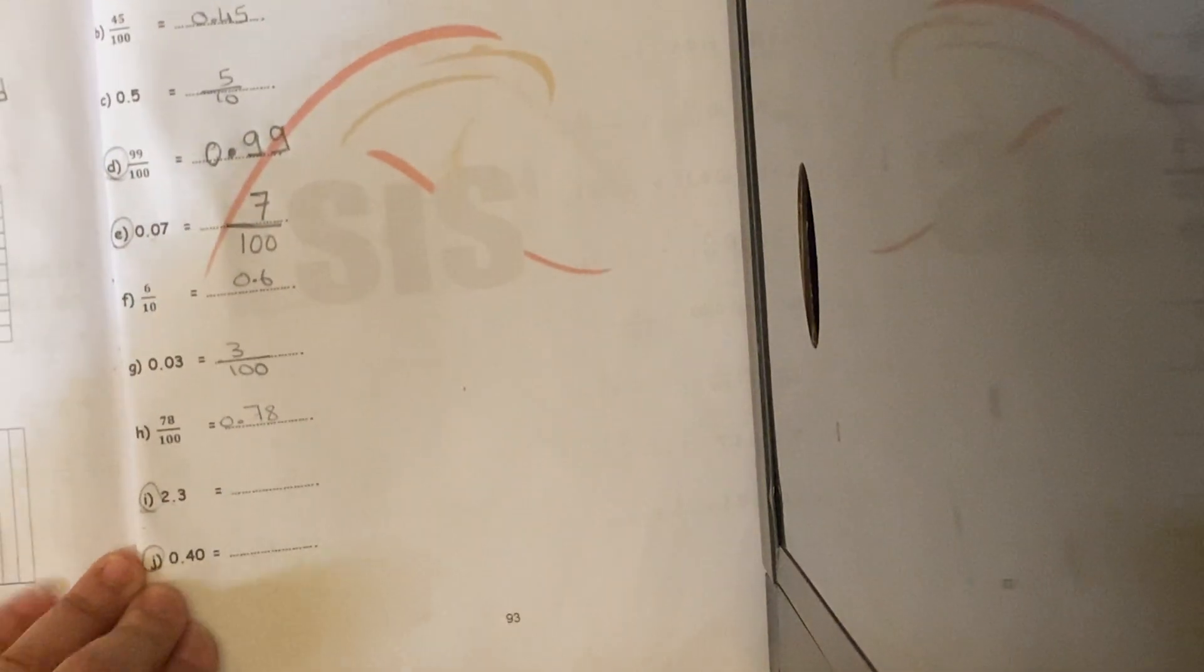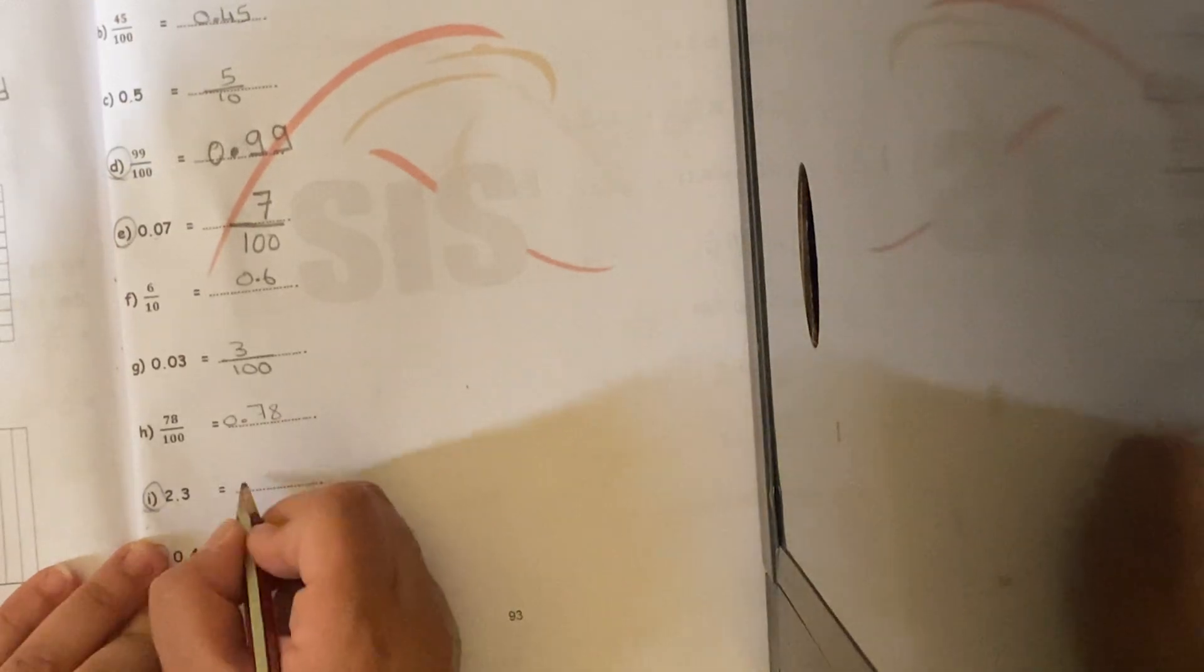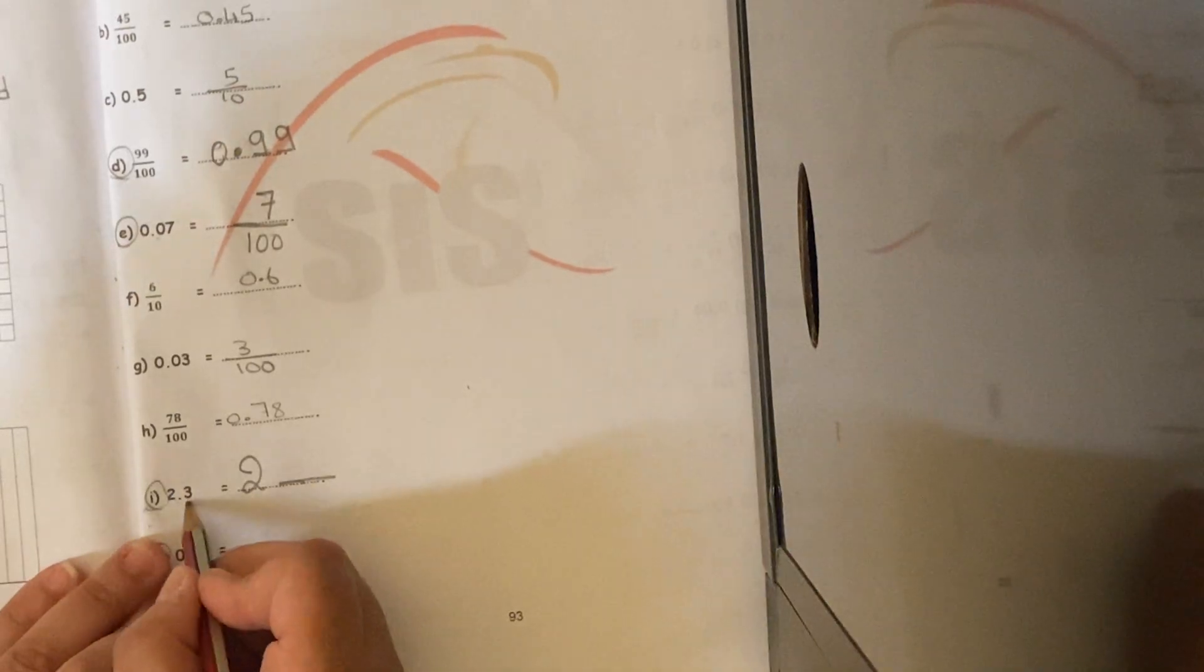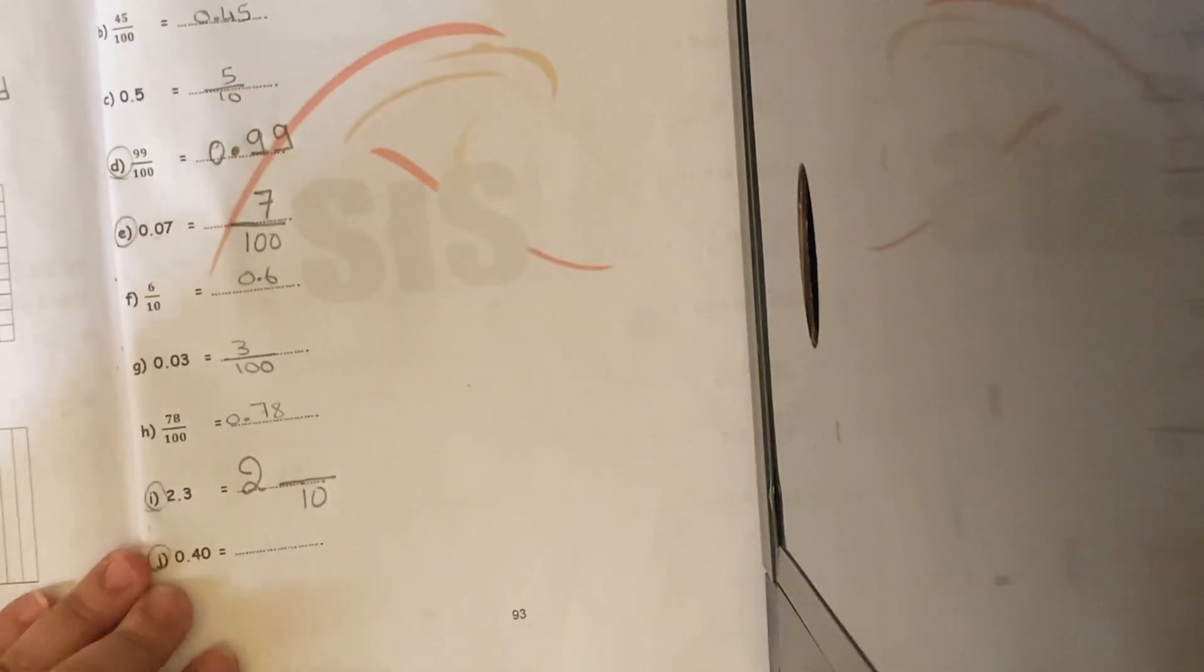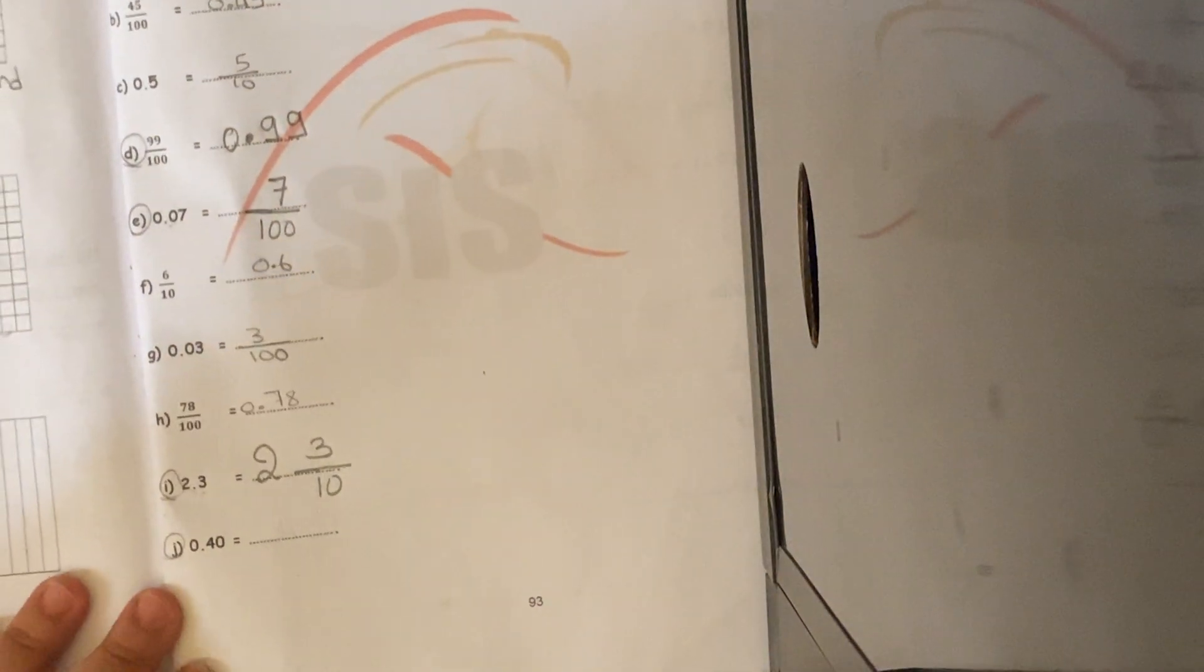Letter I, 2.3. Here, I want to write it as a fraction. I will put the 2, then I'm going to write the fraction. First, I'm over 10 because only 1 chair after the decimal point, and the 3, I'm going to put it on the fraction in the numerator.